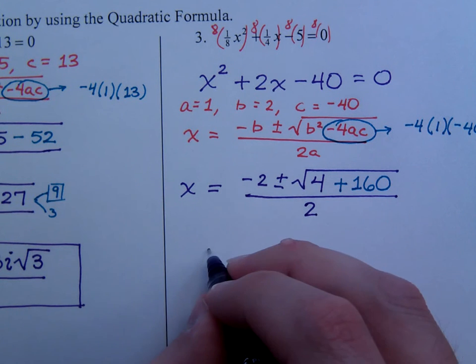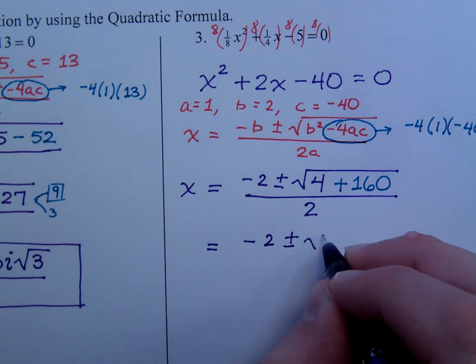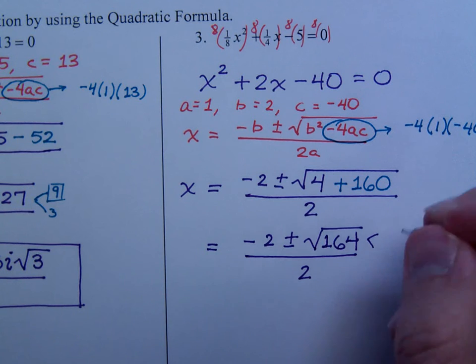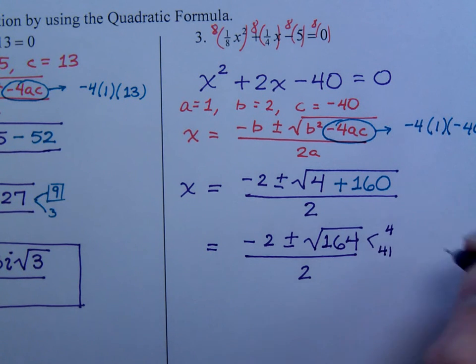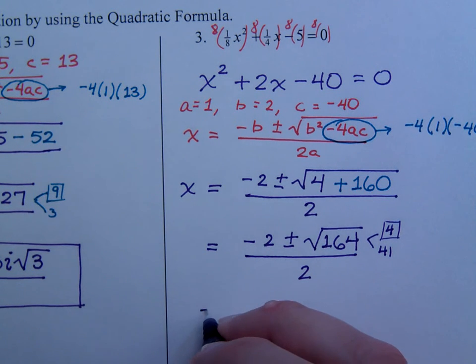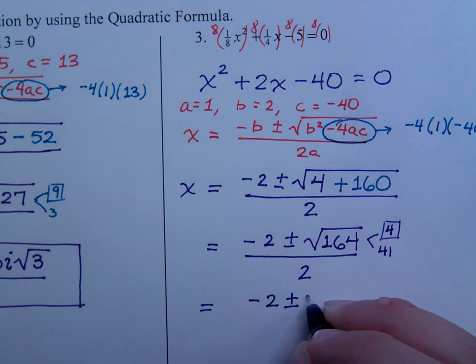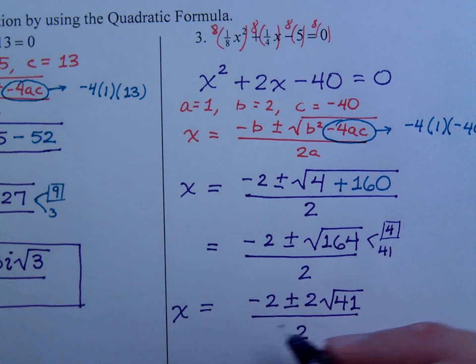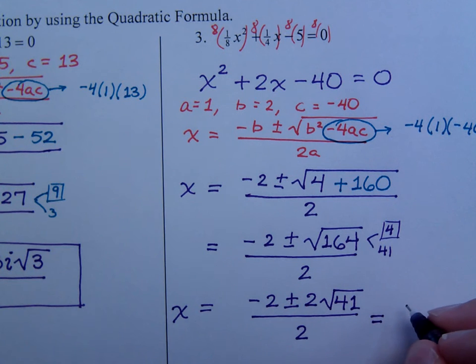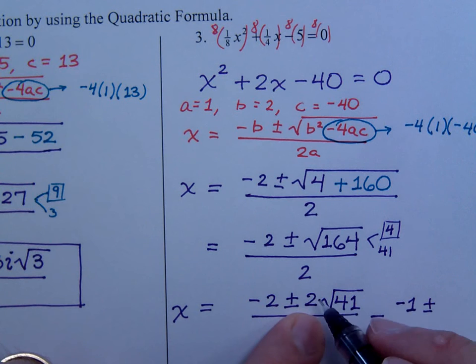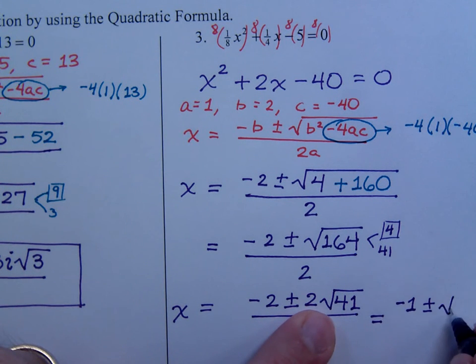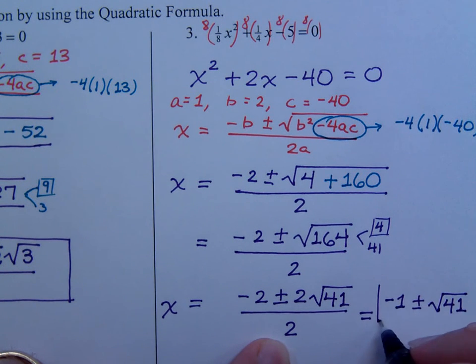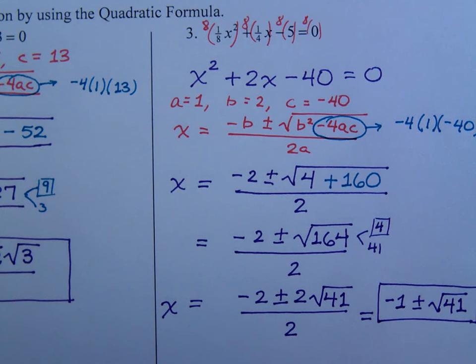Don't reduce this, you can't do that. I do get negative 2 plus or minus the square root of 164, and this is all over 2. You can break down the 164, and this is 4 times 41. That's a perfect square, so we end up with negative 2 plus or minus 2 square roots of 41 all over 2. Now notice, everything here has a common factor of 2, so I can reduce that. And I end up with negative 1 plus or minus the square root of 41. So there are my two answers.